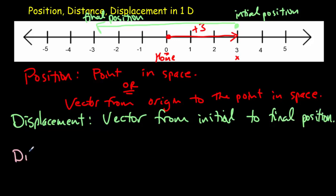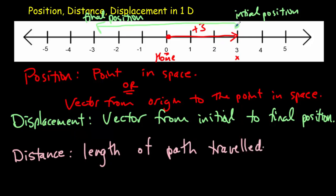If we want to talk about the distance traveled, that's a little bit different. The distance doesn't include direction — it's just the length of the path traveled. In going from the initial position to the final position, it doesn't mean we took a direct path. We might have walked way up and then came back, so that our distance moved would be ten units. Our displacement tells us nothing about the path taken; only the distance tells us the path taken. Displacement is only based on the initial and final positions.